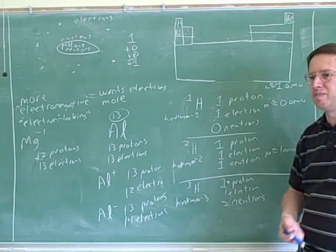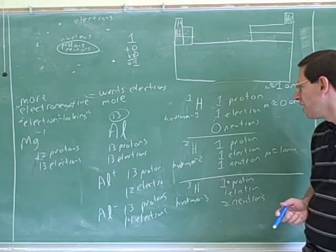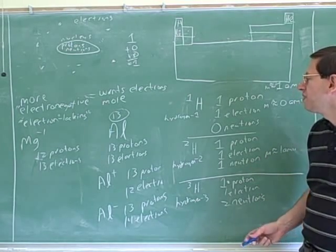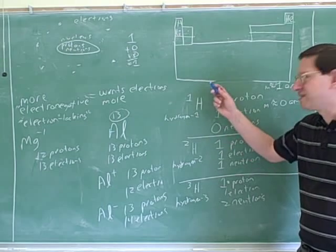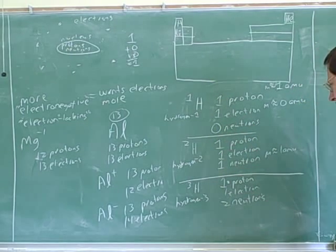Isotopes are things that are the same element with different numbers of neutrons. So here, there are three isotopes of hydrogen.